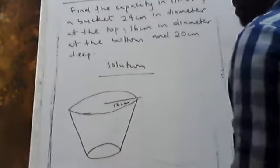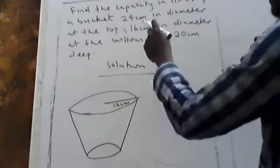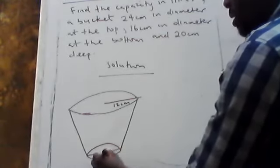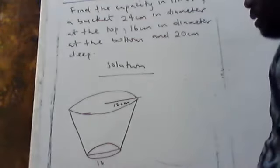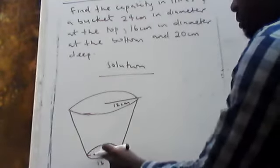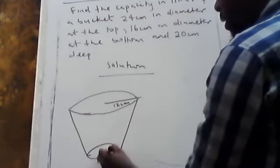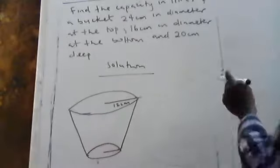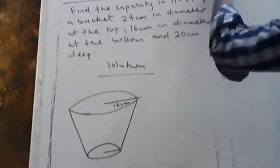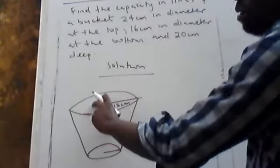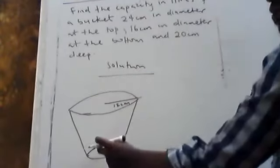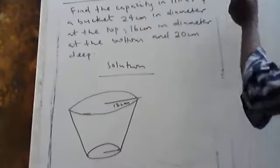The diameter is 24, so the radius will be 24 divided by 2, which is 12 centimeters. The diameter at the bottom is 6 centimeters. Capital letter R represents the radius of the bigger shape, and small letter r represents the radius of the smaller shape.